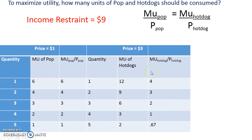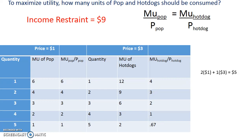Since I can't satisfy that formula with 6, I'll jump to the 4s. Looking at the 4s, for a hot dog you have a quantity of one, and you have two of the pop. To figure out how much money I have to spend — price times quantity — two pops times $1 plus one hot dog times $3 gives you $5 spent.